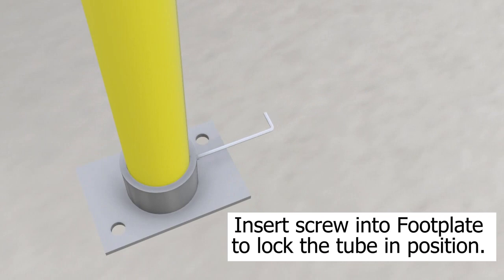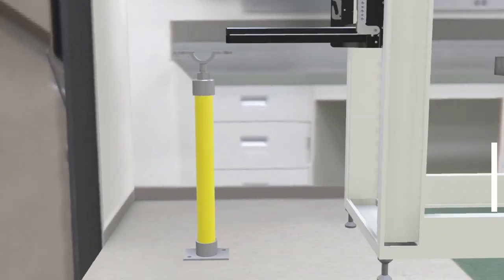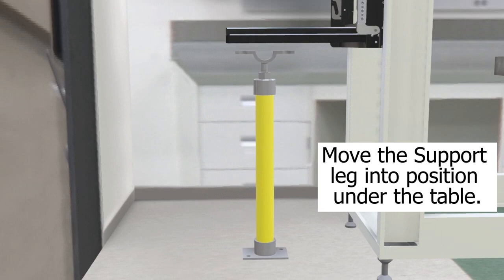Insert screw into foot plate to lock the tube in position. Move the support leg into position under the table.